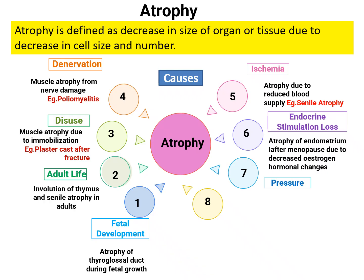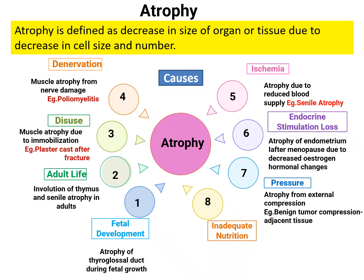Pressure atrophy occurs when a tumor causes compression on adjacent tissue. Inadequate nutrition causes systemic atrophy involving more muscles — the condition called cachexia. When there is inadequate nutrition, cachexia causes generalized muscle wasting due to poor diet.